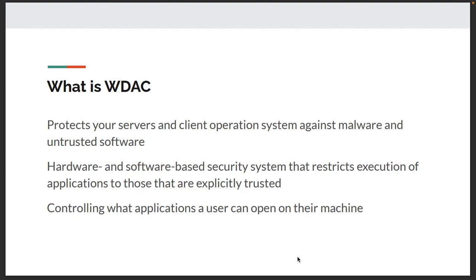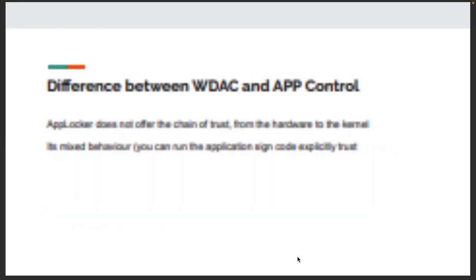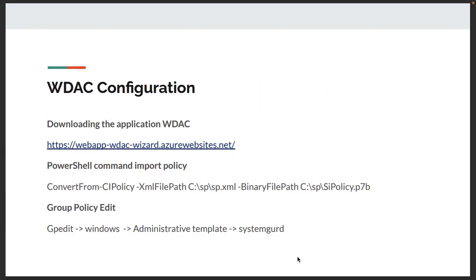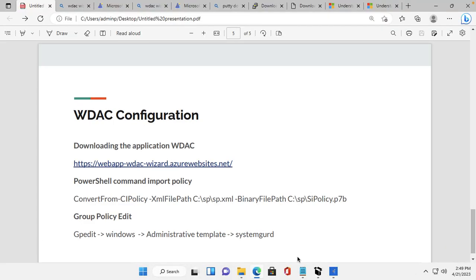So how do we configure WDAC? First we need to install the WDAC application wizard. After that we need to run PowerShell to implement it. Then we need to configure the Group Policy editor. So first we need to download the application — I will show you how to download it and from which website.